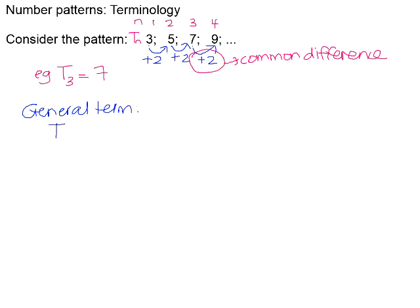The general term — if I want to know the value of the Nth term, T(N), I need to find out what must I do to N in order to generate my pattern. Because this pattern had a common difference the first time we found the difference, we say that this pattern is a linear pattern. That means that my variable, my N value, is to the power of 1. And because we are adding 2 each time, we are looking for the multiples of 2 in this pattern.